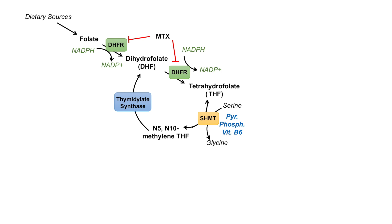Once we have N5,N10-methylene tetrahydrofolate, it can be acted on by the enzyme thymidylate synthase to recycle it back into dihydrofolate. Thymidylate synthase is a very important enzyme to remember. Its main purpose is to convert dUMP — deoxyuridine monophosphate — to dTMP, deoxythymidine monophosphate. dTMP is utilized for DNA synthesis, which is why this enzyme is critically important. This enzyme also requires the cofactor FADH2, which it oxidizes to FAD.